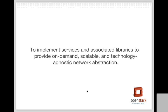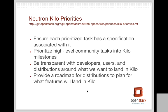I thought I would start off with a high-level overview of what the networking program's mission is. It's to implement services and associated libraries to provide on-demand, scalable, and technology-agnostic network abstractions. One thing worth noting is the services portion of this and how we're developing that and how that may affect operation deployers.